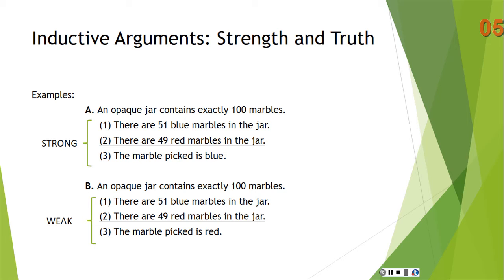Here are examples of a strong and a weak argument. Suppose you have an opaque jar containing exactly 100 marbles and a person wants to choose one at random. Strong argument — Premise 1: there are 51 blue marbles in the jar. Premise 2: there are 49 red marbles in the jar. Conclusion: the marble picked is blue. This is strong because the truth of the premises makes the probability of the conclusion greater than 50-50.